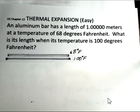In this video, we'll do a direct calculation of thermal expansion. We're dealing with an aluminum bar that has a length of 1.000 meters, and the temperature right now is 68 degrees Fahrenheit.